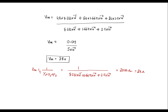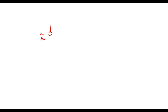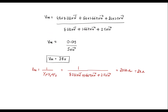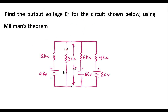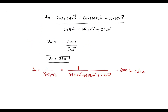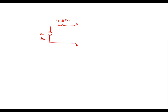Now Vm and Rm are connected in series. Vm = 38 V is connected in series with Rm = 2000 ohms, with terminals A and B. As we know, between terminals A and B the 2 kilo ohm resistor is connected, so we connect it to this Millman's equivalent circuit. The current I = 38 / (2k + 2k) = 38 / 4k = 9.5 milliamp.